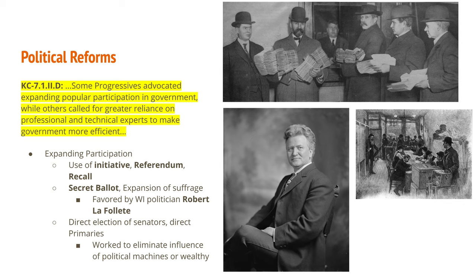Many of these reforms were pushed and experimented with by state politicians. The face of the progressive movement at the state level is Robert La Follette from Wisconsin. He served as a representative, senator, and governor for Wisconsin, and tried running for president. He is the face of the state progressive movement in expanding suffrage for Americans. Other reforms include the direct election of senators and direct primaries, again working to eliminate the influence of political machines and the wealthy. Senators who used to be voted in by state legislatures now had to account to the voters directly.